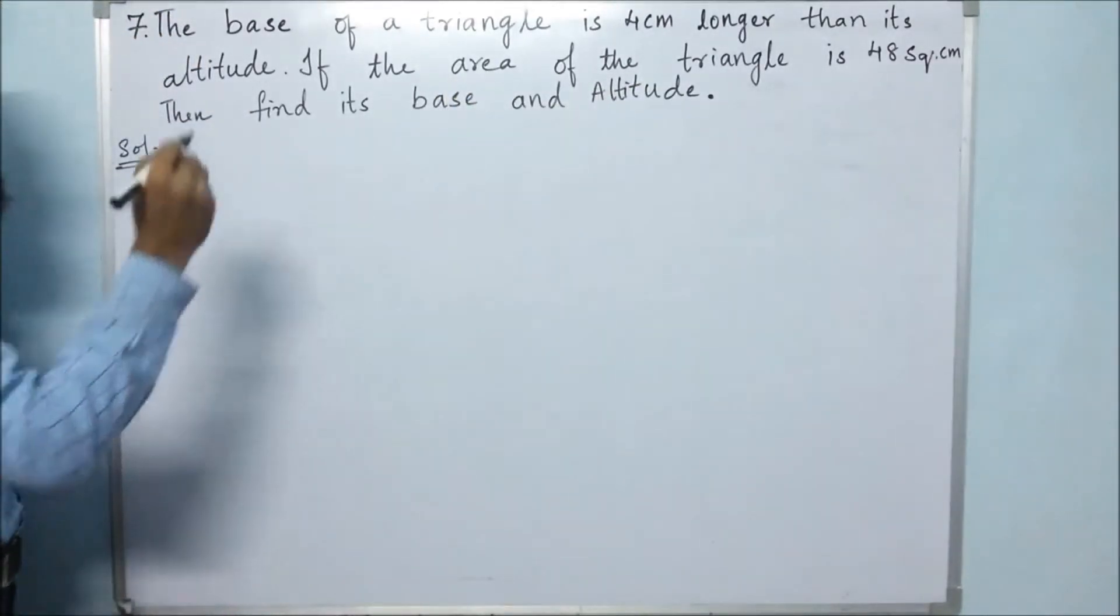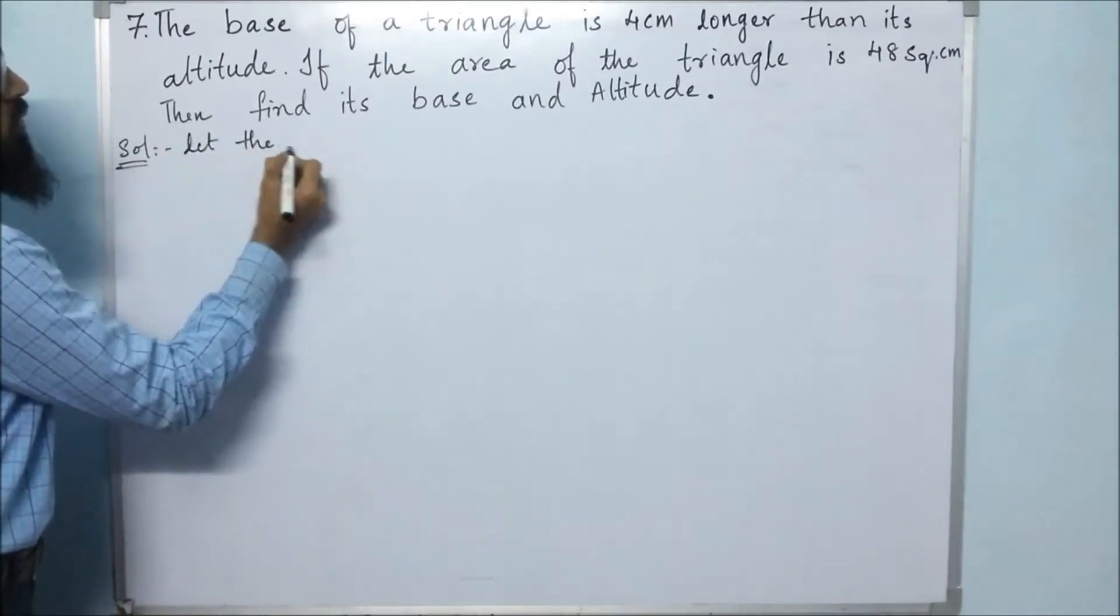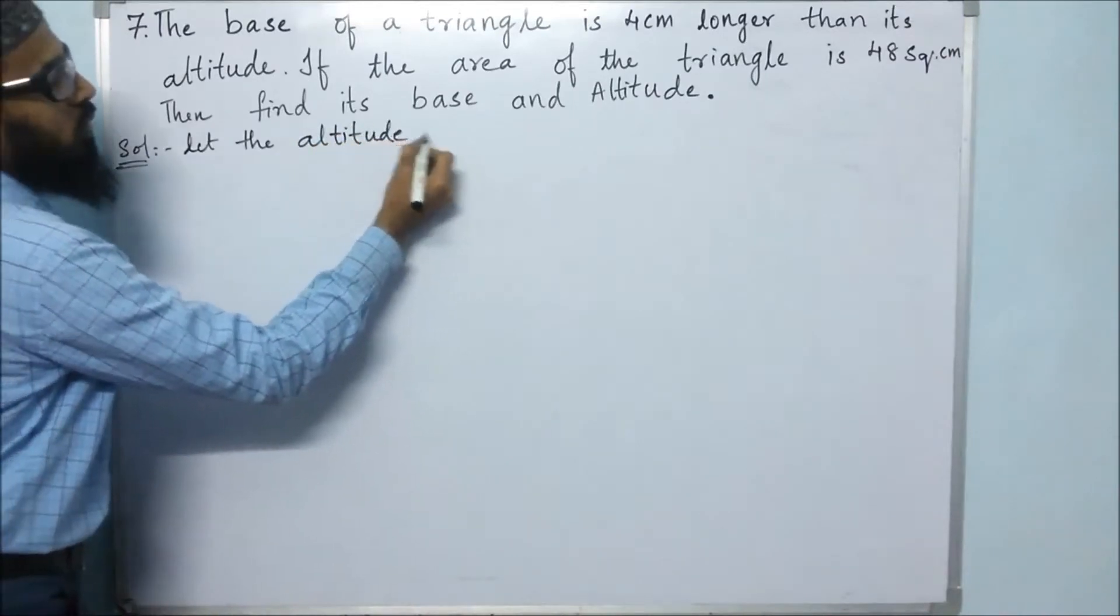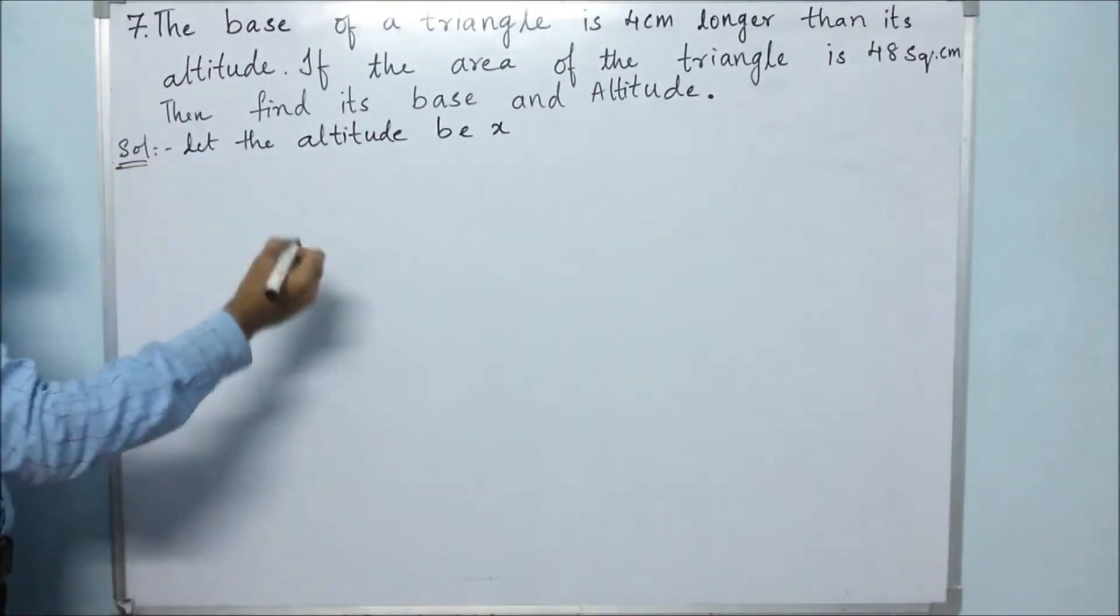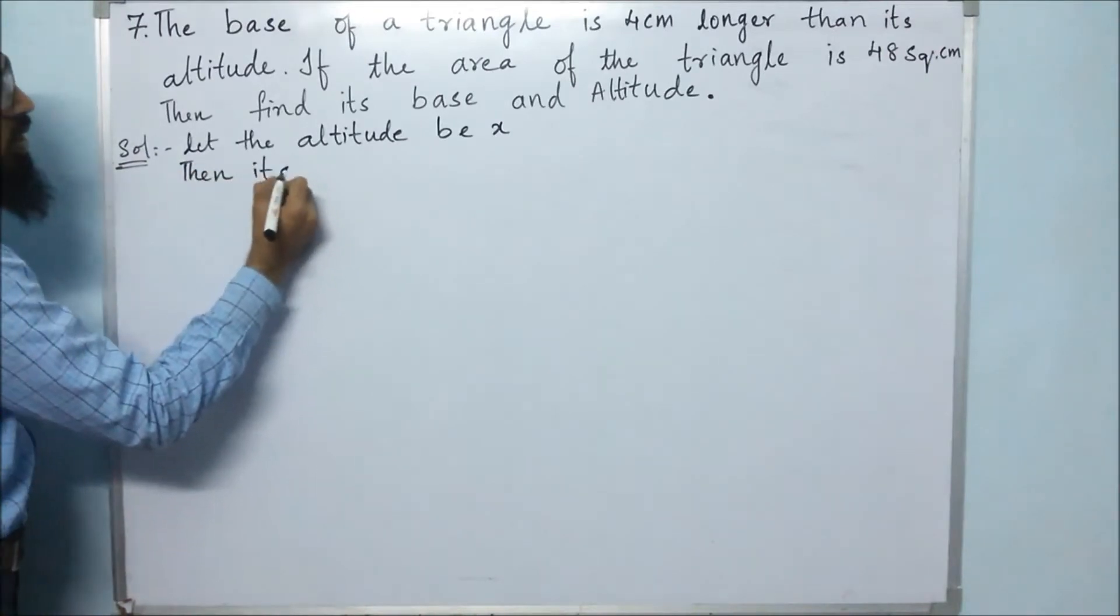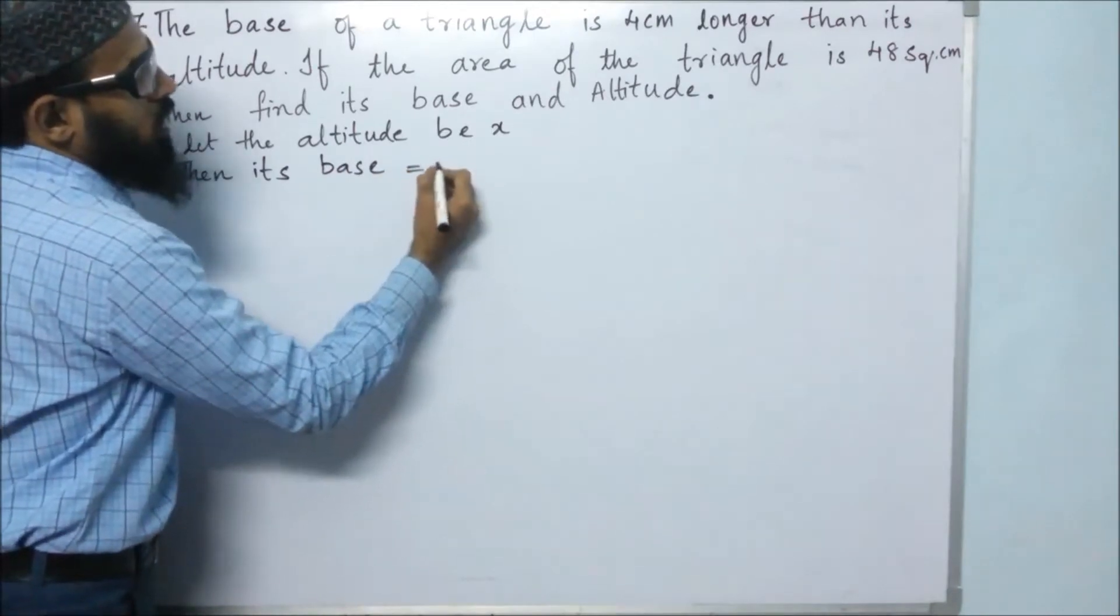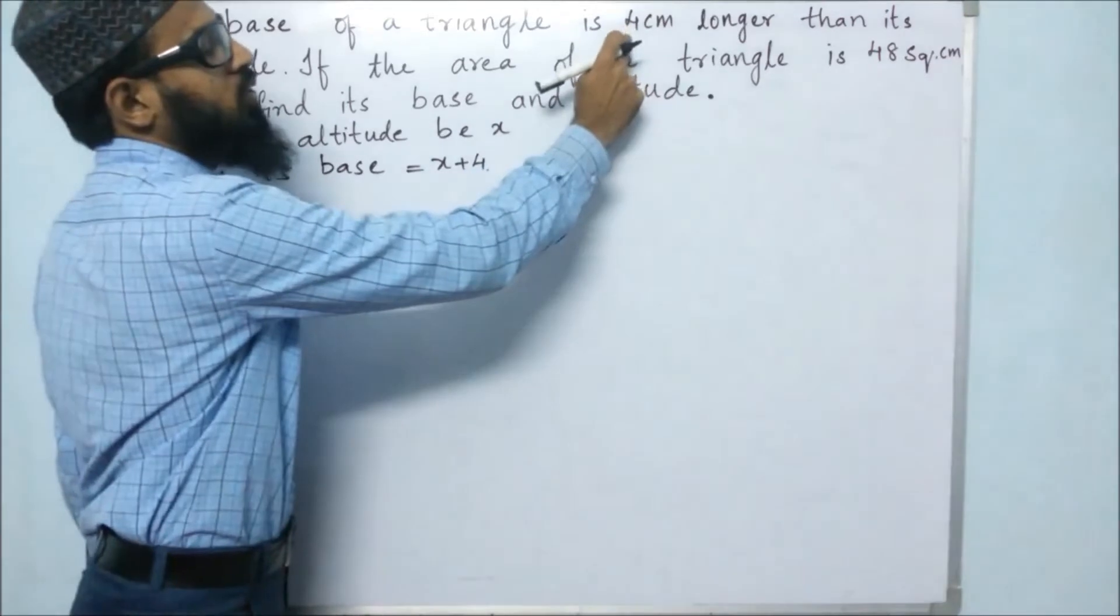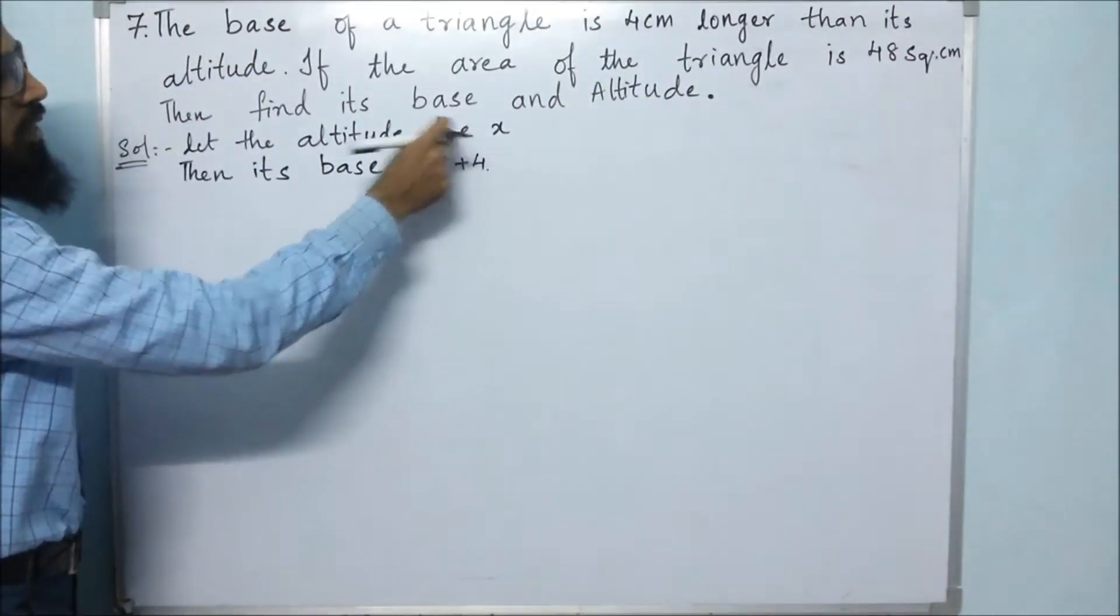So first, we need the altitude. Let the altitude be x. If we know the altitude, then it is easy to find the base. Then, its base is x plus 4. Why? Because 4 cm longer, so it is 4 cm more than the altitude.